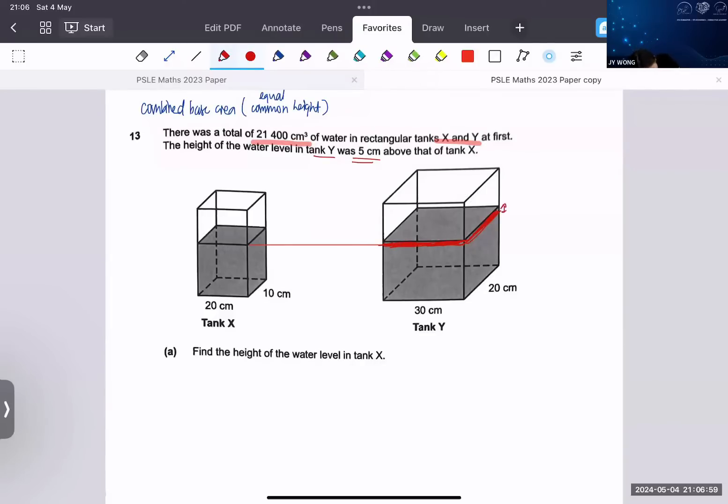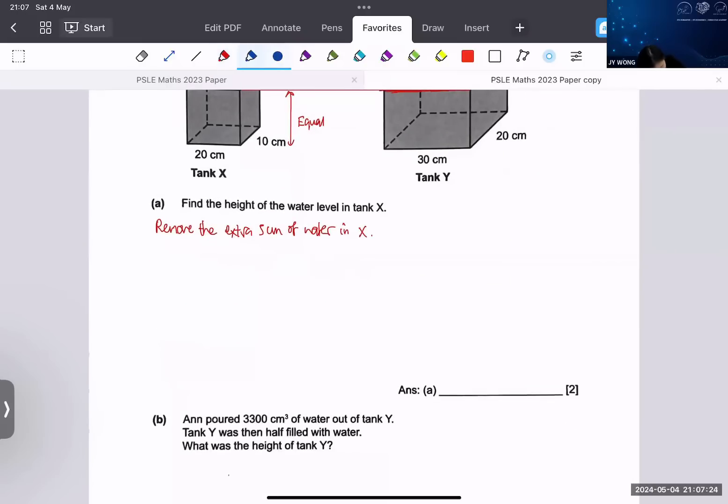This is your 5 cm. So what you will do for this type of question is that you will try to make them equal height, so that you can actually find out the equal height of both. What we will do is to remove the extra 5 cm of water in Y.